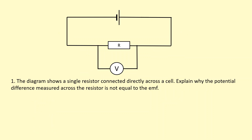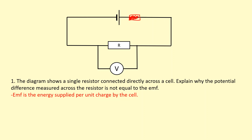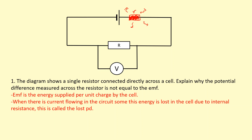The diagram shows a single resistor connected directly across the cell. Explain why the potential difference measured across the resistor is not equal to the EMF. EMF is the energy supplied per unit charge by the cell. The voltmeter reading is not equal to EMF because there is some internal resistance, and that internal resistance uses up some of the energy when current flows through it. So whenever there's a current flowing through the circuit, there's some energy lost inside the cell due to the internal resistance — this is the lost PD. The voltmeter measures EMF minus the lost PD, which is the terminal voltage.